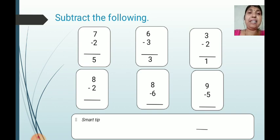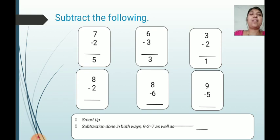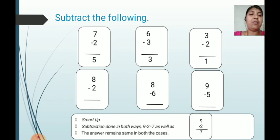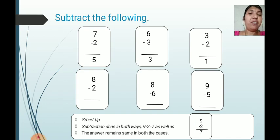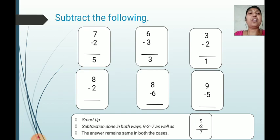Below that there is a Smart Tip. Read it: 'Subtraction can be done in both ways.' For example, 9 minus 2 equals 7 can be written horizontally as well as vertically, and the answer remains the same in both cases — whether you write it horizontally or vertically, the answer is always the same.